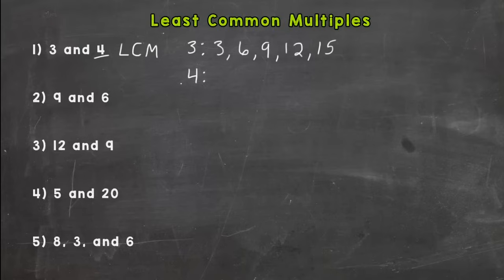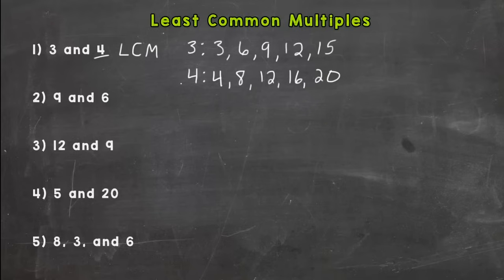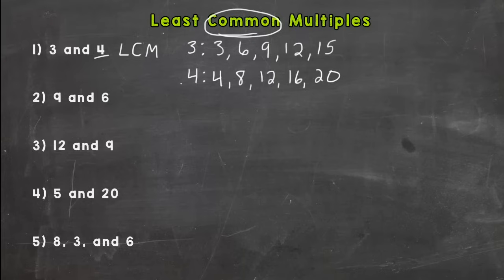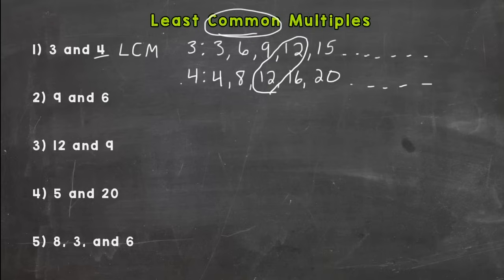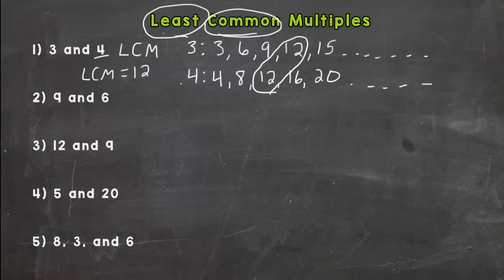Now we write our multiples list for four. It's all the numbers that four can multiply into, and the easy way to write it out is to count up by four: four, eight, twelve, sixteen, twenty. We look at both lists to see if they share any numbers in common. It looks like they have twelve in common. There aren't any less than twelve, so our LCM for three and four is twelve.